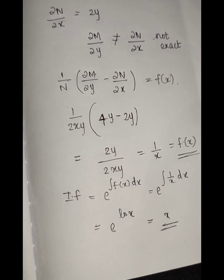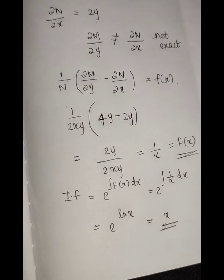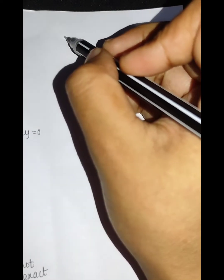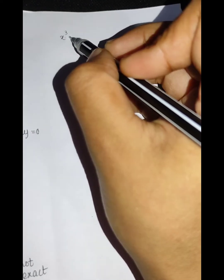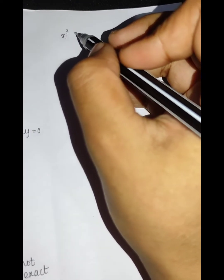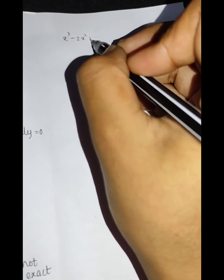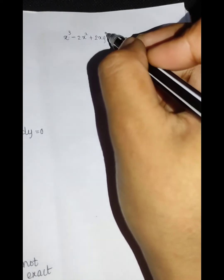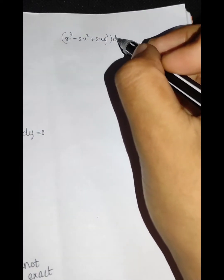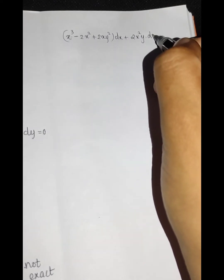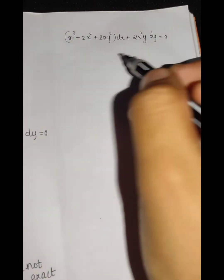We multiply the integrating factor x throughout. The equation becomes x³ - 2x²y² + 2xy² dx - 2xy dy equals 0. This is now an exact equation.